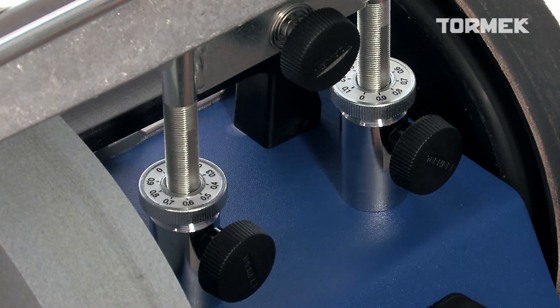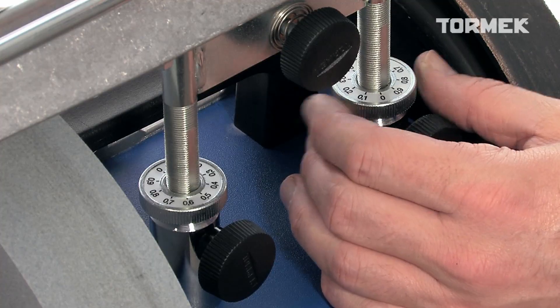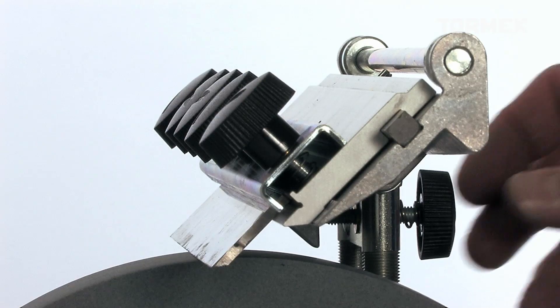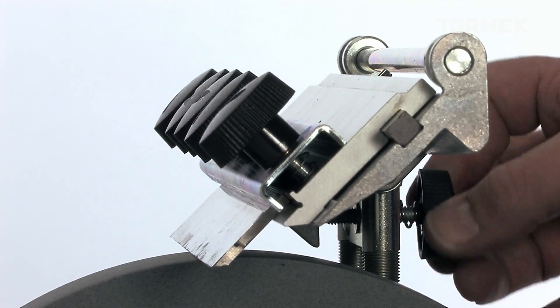The grinding depth can be set to one tenth of a millimeter or four thousandths of an inch. The edge angle is set with this screw.